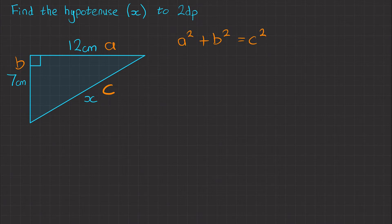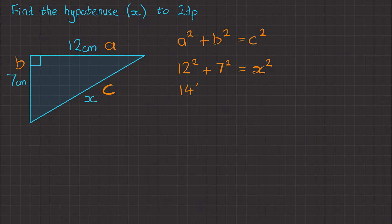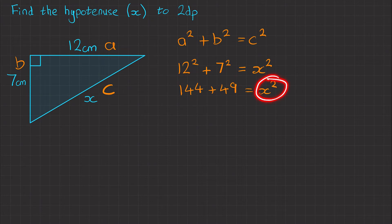Our second step: substitute in the values. So we've got a, which is 12 — so 12 squared — plus b, which is 7 — so 7 squared — equals c squared, which I'm substituting as x squared. 12 squared is 144, plus 7 squared which is 49, equals x squared. 144 plus 49 is 193, so 193 equals x squared.